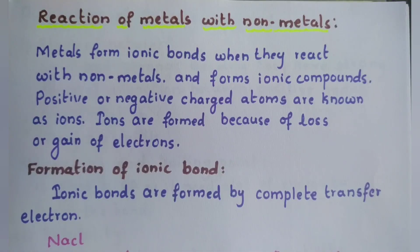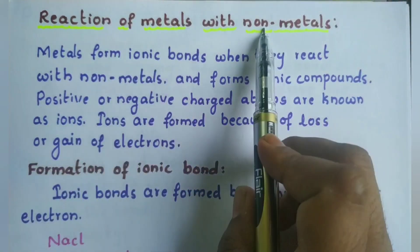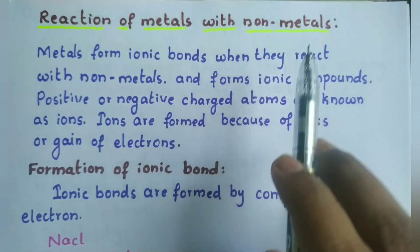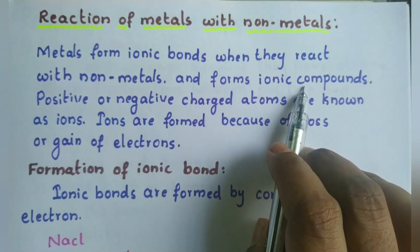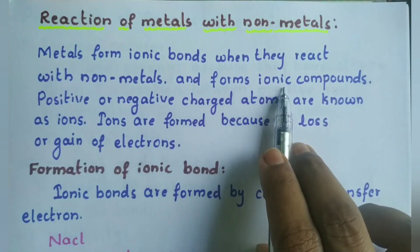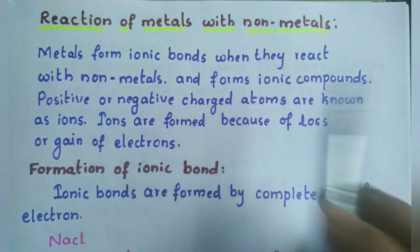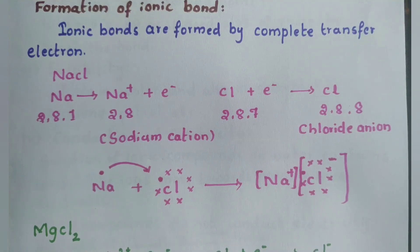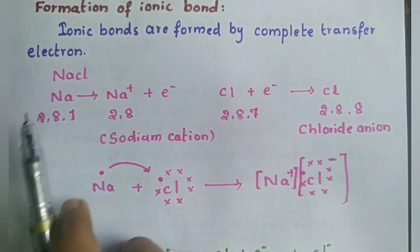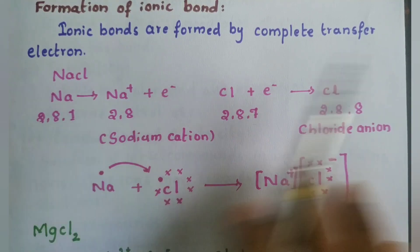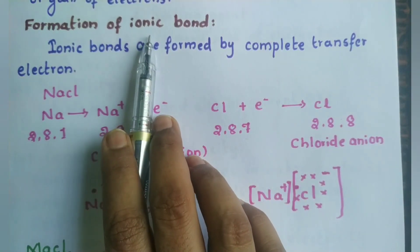Next we discuss the reaction of metals with non-metals. Metals form ionic bonds with non-metals and they form ionic compounds. Ionic compounds are made up of ions — positive or negatively charged atoms are known as ions. An ionic bond is formed by the complete transfer of electrons. In contrast, a covalent bond involves sharing of electrons — we will learn about covalent bonds in the carbon and its compounds chapter. For now let us focus on ionic bonds, which are formed by the complete transfer of electrons.